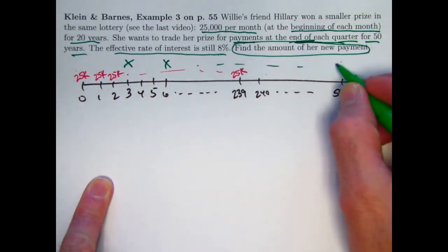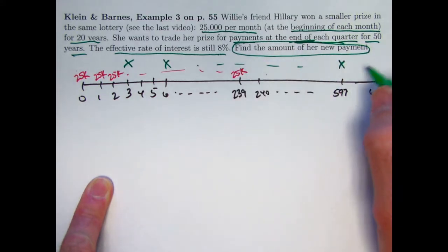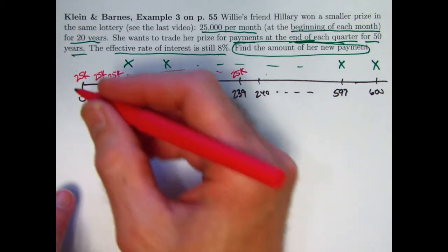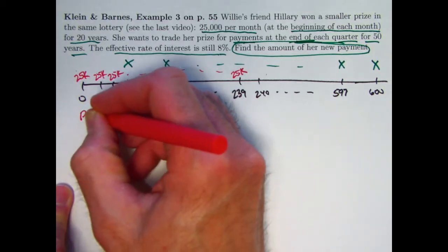Second to last is at month 597. And the last payment is at month 600. So we'll find the present values of these things, the second one in terms of x, and we'll be able to solve for x. So let's do this first from first principles.